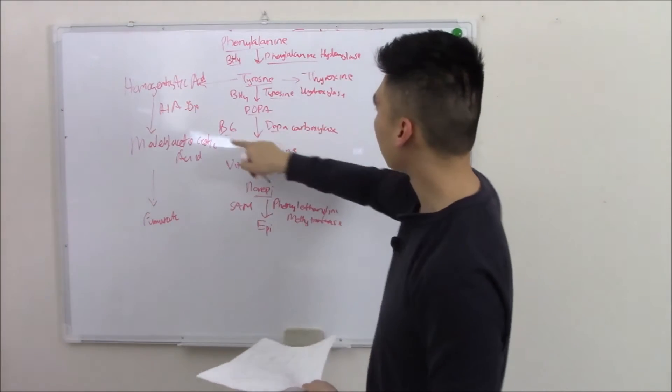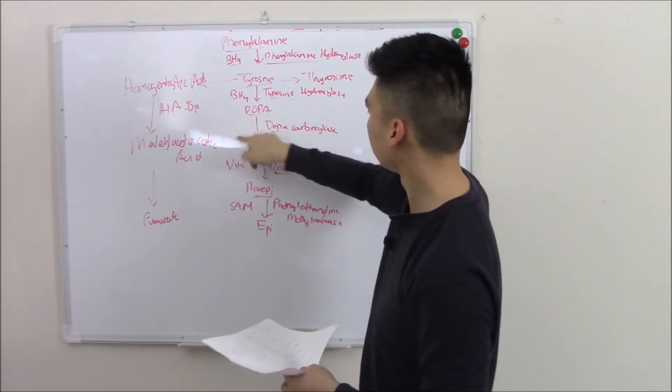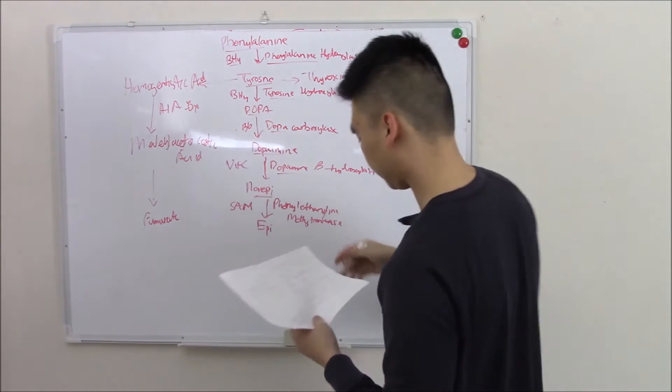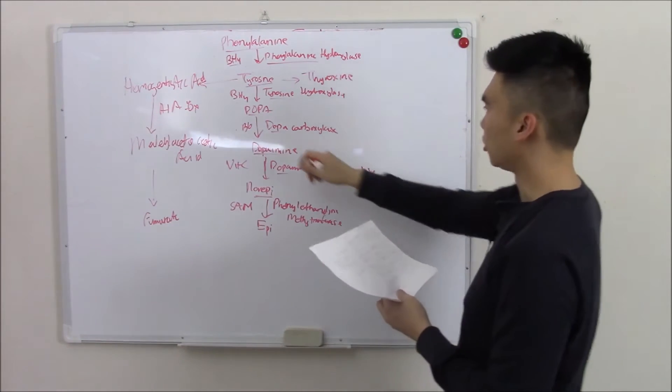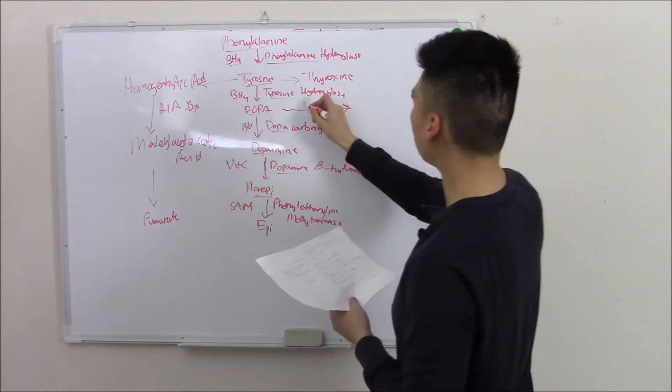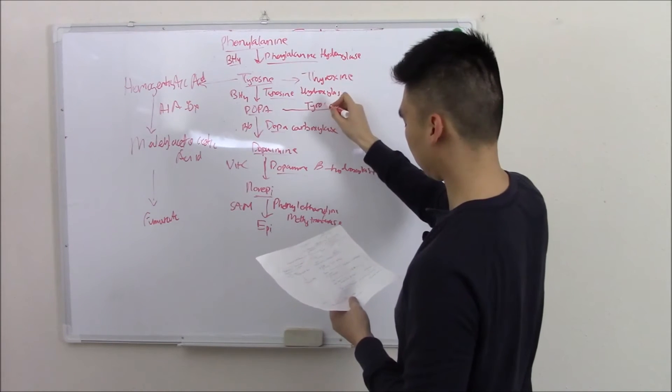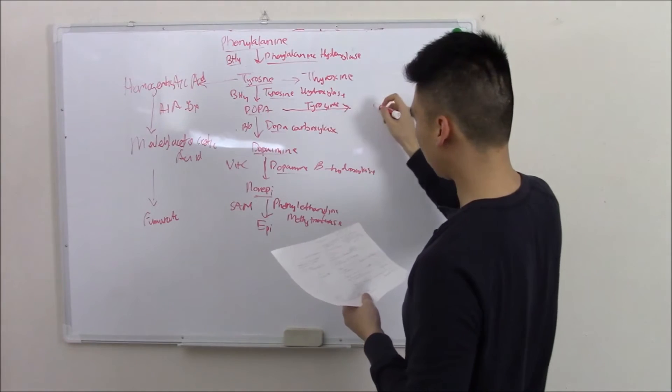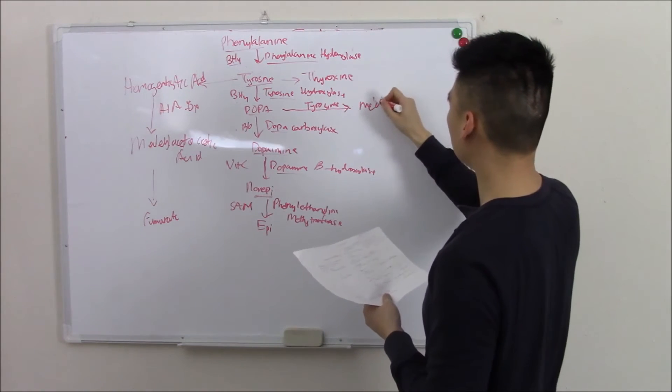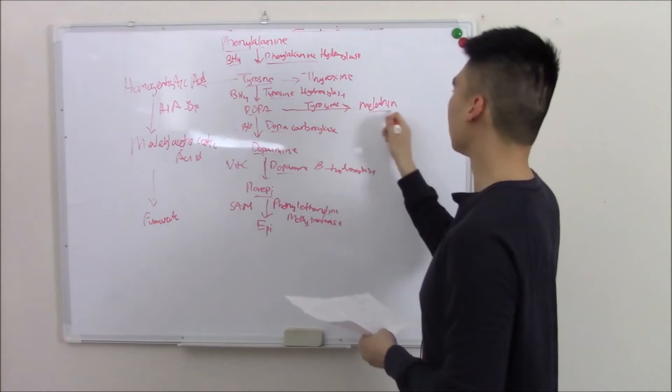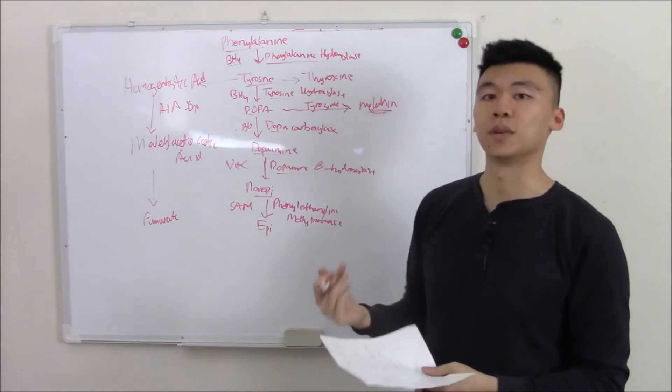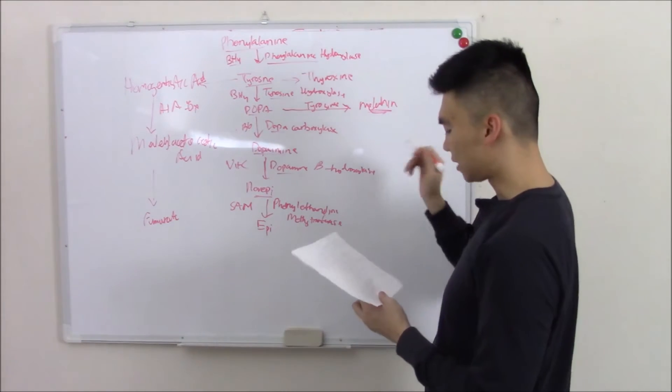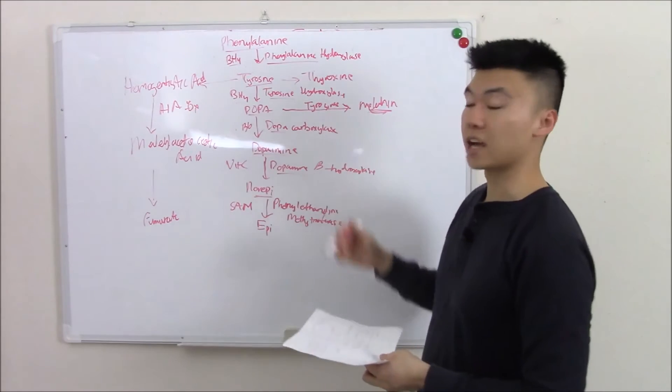One more side enzyme is DOPA. DOPA can via tyrosinase become melanin. Melanin is what's seen in your skin, gives you pigmentation. That is it for the main reactions and the side reactions.